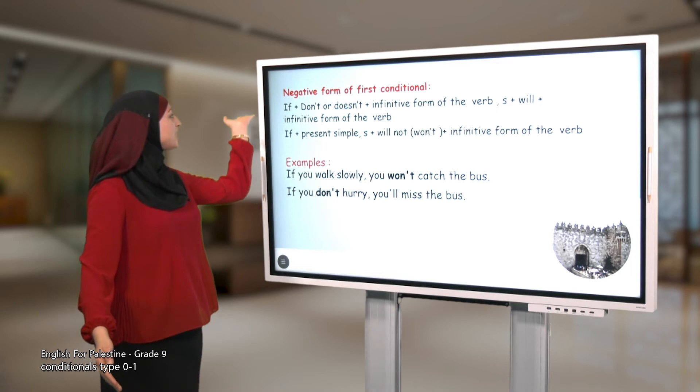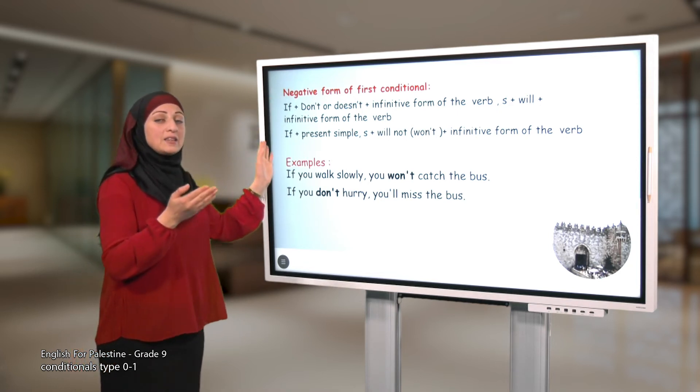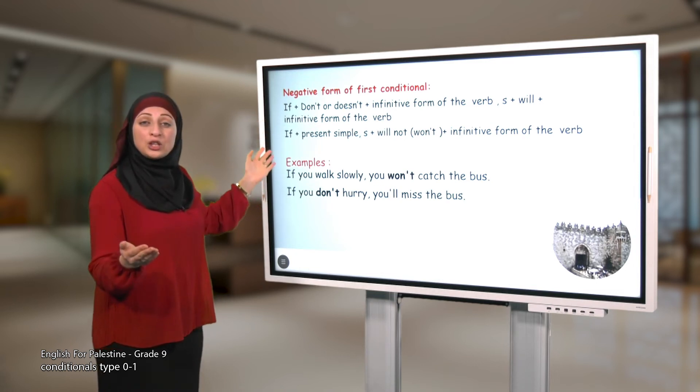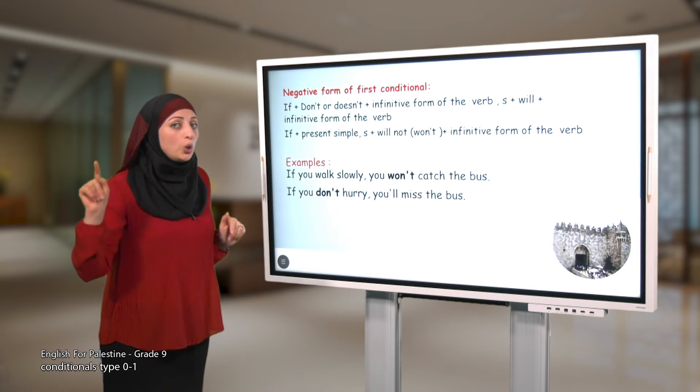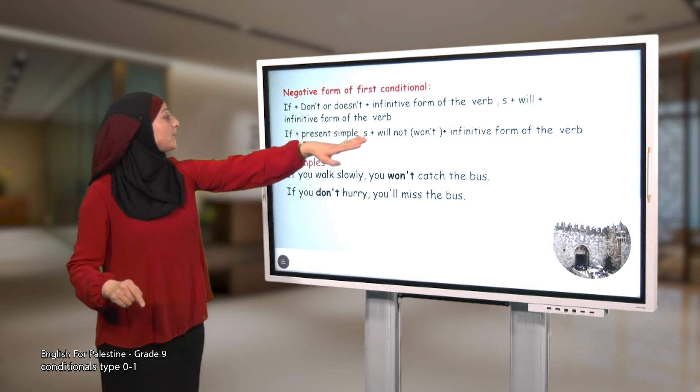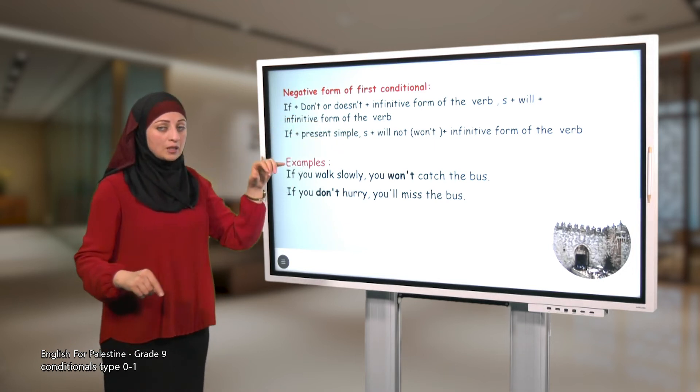Now let's talk about the negative form of first conditional. You can either negate the if clause or the main clause. If you want to negate the if clause, I will use if plus don't or doesn't plus infinitive form of the verb, subject plus will plus infinitive form of the verb in the main clause.